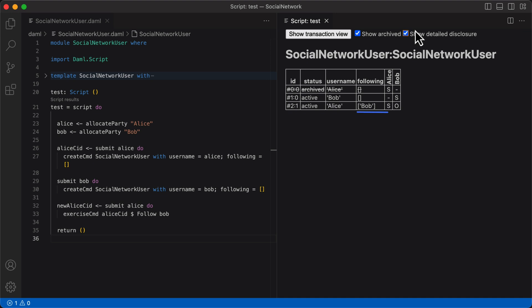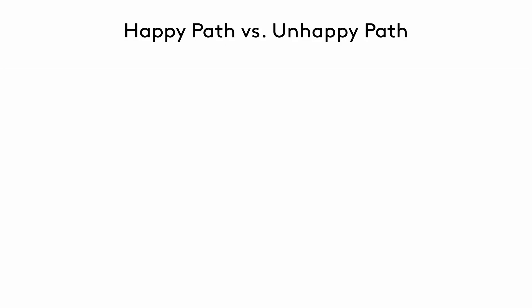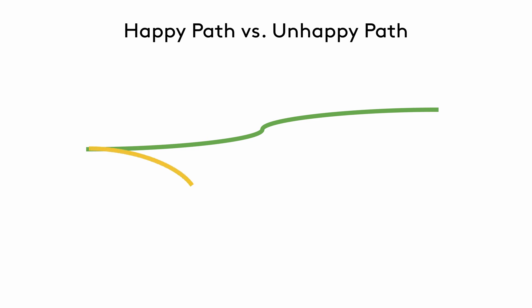Just a friendly reminder: to see archived contracts, simply click the show archive checkbox in the script results pane. So far, we've tested the workflow we intend users of the application to follow, and it works as expected. The creation of a contract and the exercising of the choice succeeds when it's supposed to succeed. This is referred to as the happy path.